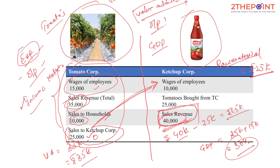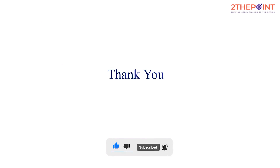I will leave the income method to you, but the purpose of this video has been served. Value addition is the contribution of labour and capital during any stage a product happens to undergo — including marketing, transportation, and all other stages. The total economic activity taking place at each stage is what we call value addition. We will go ahead and discuss the GVA method of computing GDP. Thank you.